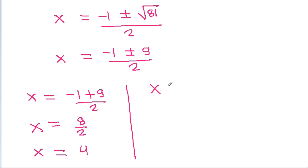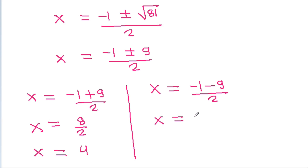And x is equal to minus 1 minus 9 over 2, and x is equal to minus 10 over 2, so x is minus 5.